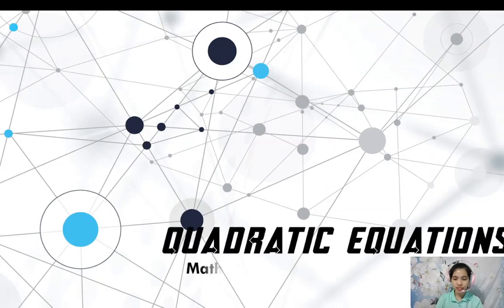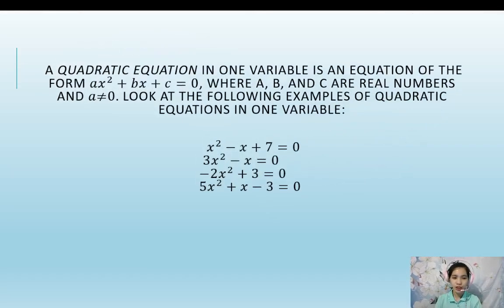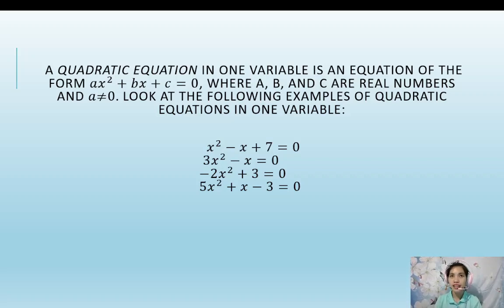Quadratic equations. A quadratic equation in one variable is an equation of the form ax squared plus bx plus c equals 0, where a, b, and c are real numbers and a must not be equal to 0.